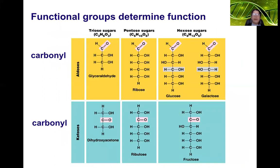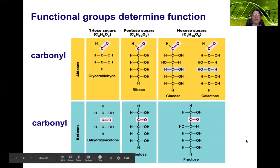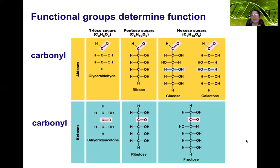The functional groups that are present in sugars determine their function. As we saw in the first video, there was a difference between glucose, galactose, and fructose. It turns out that all three of them have the same functional groups — they have hydroxyl groups — but the hydroxyl groups are in different positions. They also have carbonyl functional groups, except that glucose and galactose are aldoses, because they have the aldehyde variety of the carbonyl group. Fructose is a ketose — it has a ketone functional group, so the C double bond O is in the middle of the molecule.